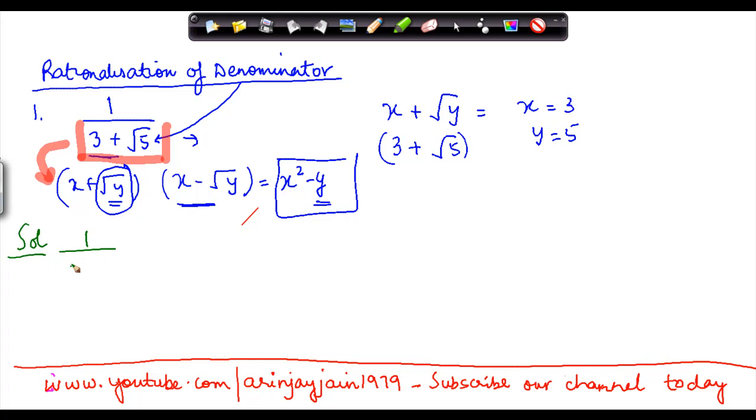We know that 1 divided by 3 plus under root 5 into 1 doesn't change the equation, or we can also replace this by writing this as the original equation. Equation 1 can be replaced by x minus under root y into x minus under root y divided by x minus under root y because this is also equal to 1.